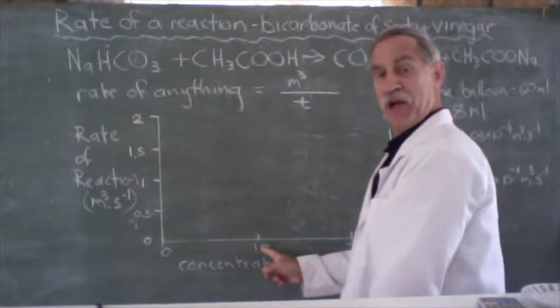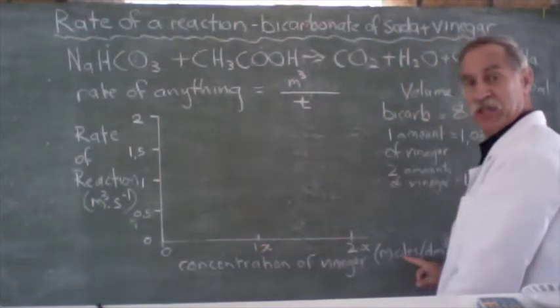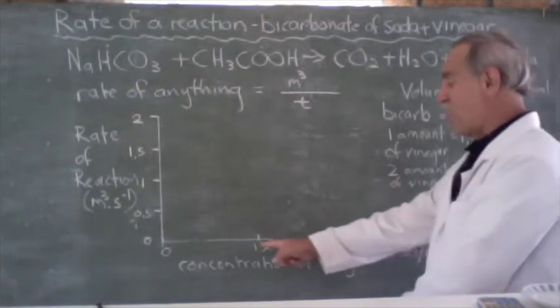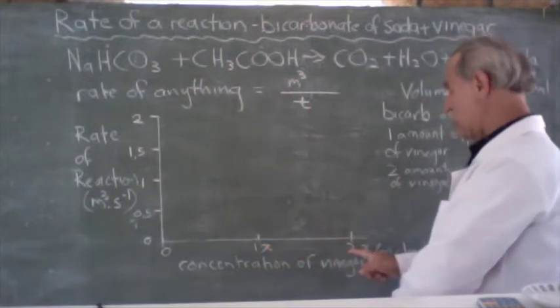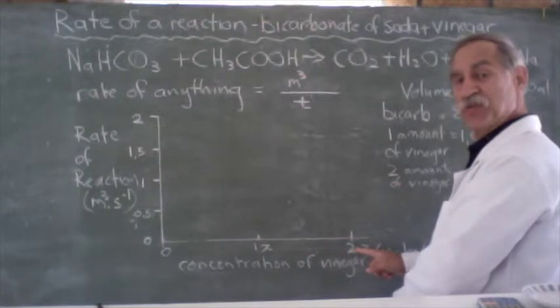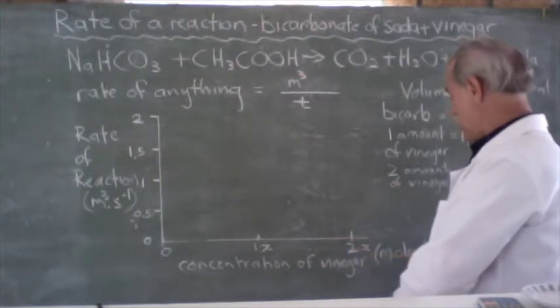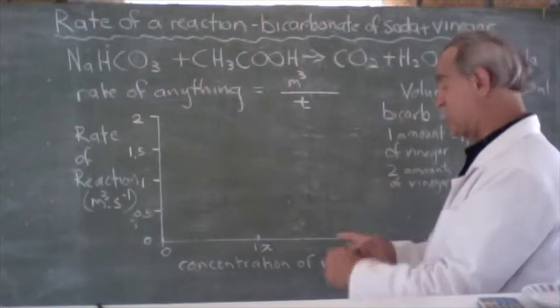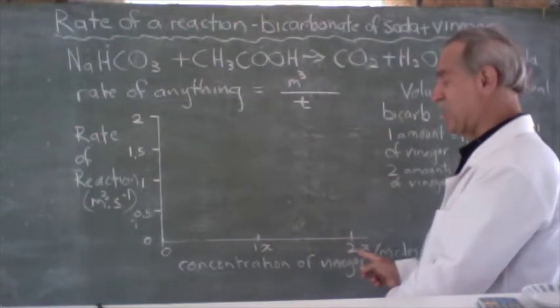Then we used one amount of vinegar, measuring moles per decimeter cubed. We don't know how many moles it was. So, we say one X amount, and then we use twice the amount, two X amount in moles per decimeter cubed of vinegar. The actual amount, we don't know, but we do know that we doubled the concentration in the second case.